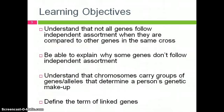By the end of this lesson, students will understand that not all genes follow independent assortment when they are compared to other genes within the same cross. They will be able to explain why some genes don't follow independent assortment. They will understand that chromosomes carry groups of genes or alleles that determine a person's genetic makeup, and they will be able to define the term linked genes.